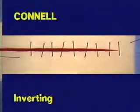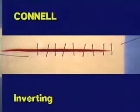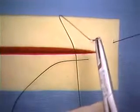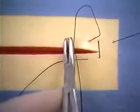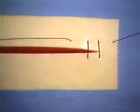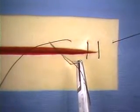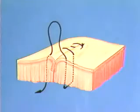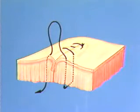The Connell suture pattern is also an inverting suture pattern. The Connell pattern differs from the Cushing in that the suture penetrates all layers of the wall into the lumen with each needle bite. This illustration shows a completed Connell suture pattern.